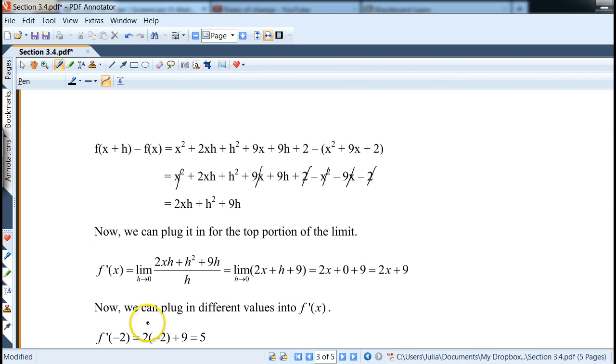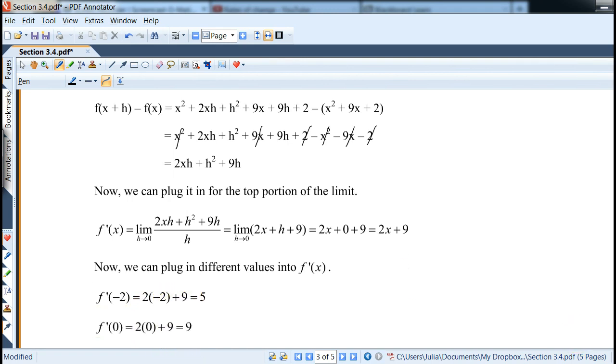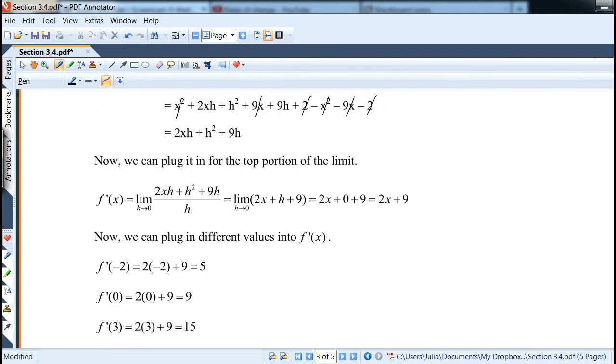Now that you have it, now you can plug in f prime of negative 2, for example. Plug it in into 2x plus 9. We'll get negative 4 plus 9, which is 5. Same thing with 0. We get 9. And same thing with 3. We get 15. So that's kind of the idea.